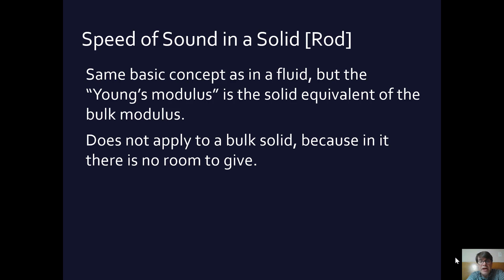This does not apply to a bulk solid because a bulk solid has no room to give. So basically we take that same basic formula and instead of B, we put in the Y for Young's modulus. The velocity of sound in a solid rod that can move a little bit is going to be the square root of Young's modulus divided by the density of the rod.